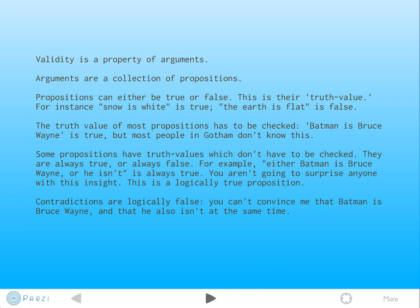Validity is a property of arguments. Arguments are a collection of propositions, and propositions can either be true or false. We're going to call this their truth value. For instance, 'Snow is White' has a truth value of true. 'The Earth is Flat' has a truth value of false. The truth value of the vast majority of propositions has to be checked against the real world. 'Batman is Bruce Wayne' happens to be true, but most people in Gotham don't know this. You'd have to find out somehow what the truth value of that proposition is.